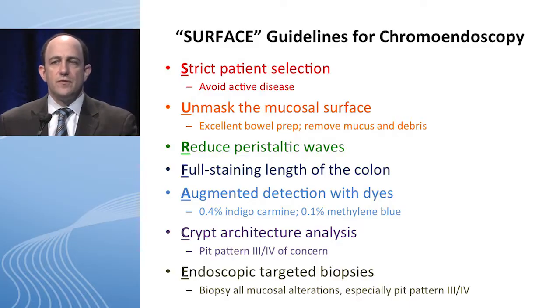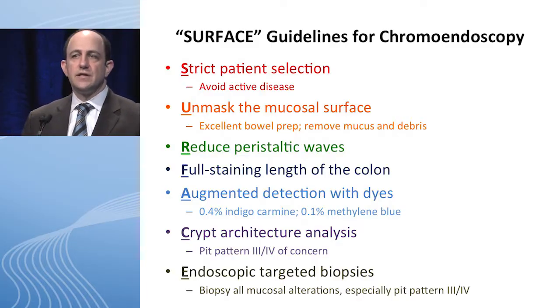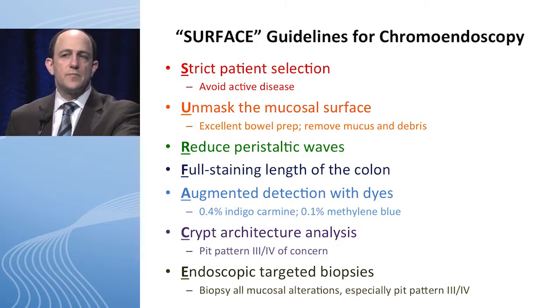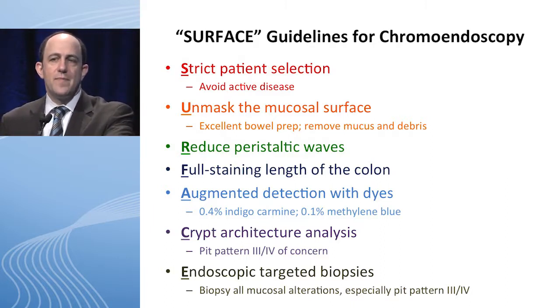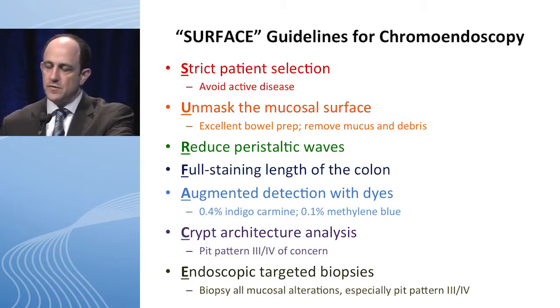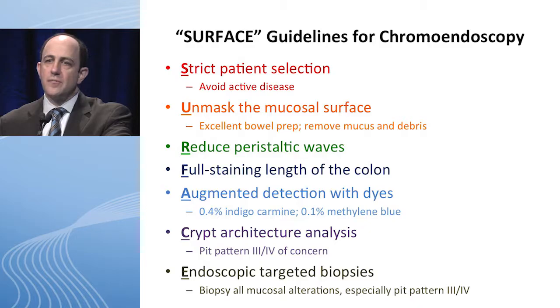There's been a proposal to use the SURFACE guidelines for chromo, which includes strict patient selection, unmasking the mucosal surface, reducing peristaltic waves — which may occur with the opioid used during conscious sedation, though sometimes people use glucagon — full staining length of the colon, augmented detection with dye, crypt architecture analysis, and endoscopic targeted biopsies especially for pit patterns three and four.